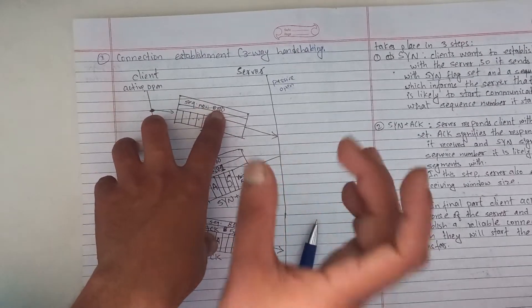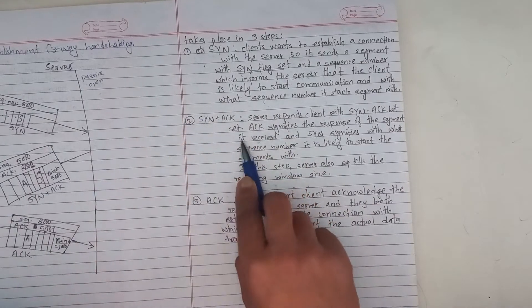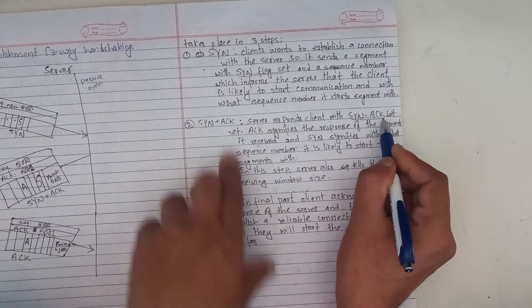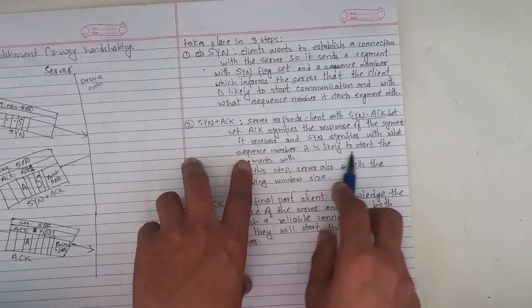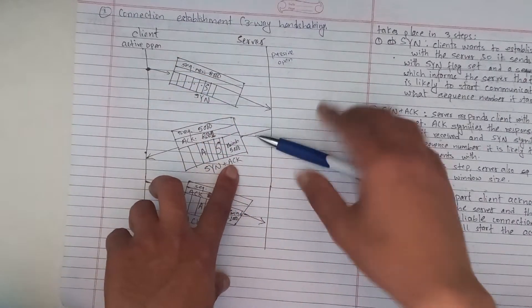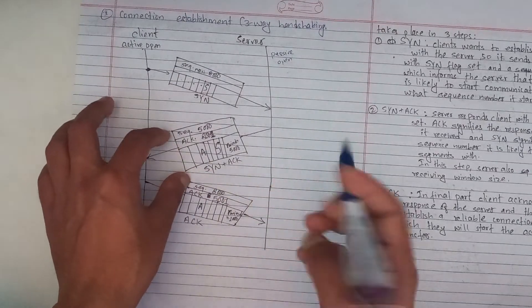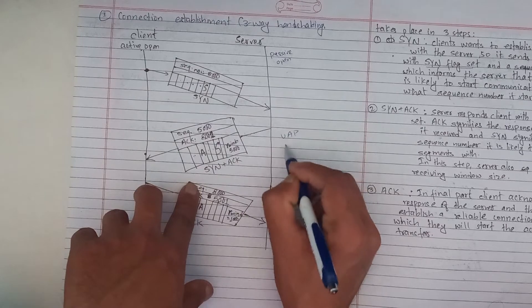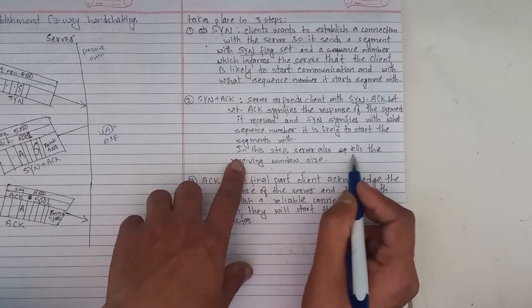The server acknowledges and sends back a SYN+ACK segment, with its own sequence number, indicating with what sequence number it is likely to start. The server also tells the client the receiving window size in this step.